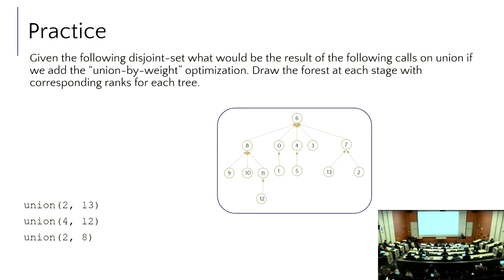A reminder: sets are truly a set — you cannot pull out one community member and move them around. They all move as a single unit. So even though we were unioning items that weren't themselves the representatives, whenever we call union we jump into that set, travel up to the overall root — that is the representative — then find the other set, travel up to its root, and associate them.